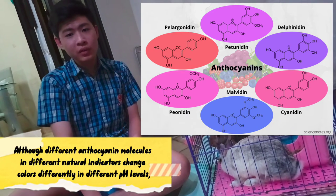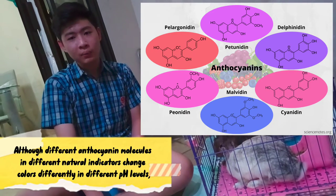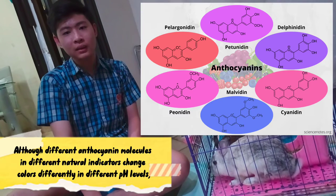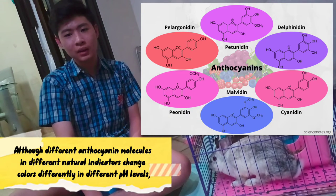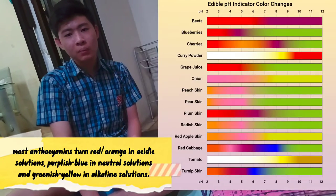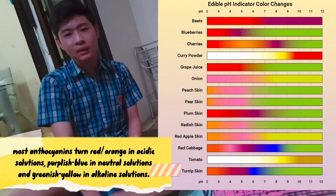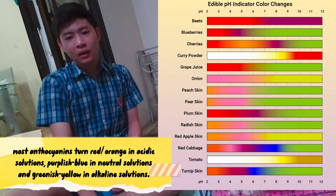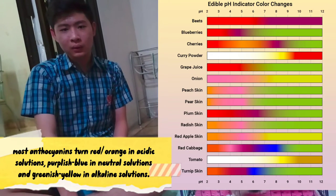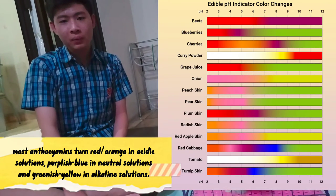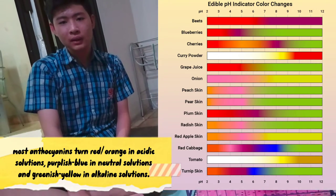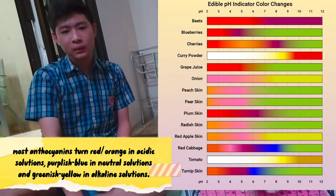Although different anthocyanin molecules found in different natural indicators change colors differently at different pH levels, most anthocyanins turn red or orange in acidic solutions, purplish blue in neutral solutions, and greenish yellow in alkaline solutions.